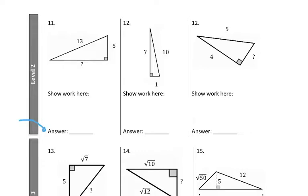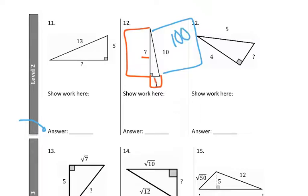Let's use the Pythagorean theorem to answer question twelve. We're changing the information we know at this point. We know the area of the blue square is 100 and the area of the small square is 1. So we're trying to figure out what area we need so that when we add it to 1 we end up with 100. That's simply 99 — this area has to be 99, so that 99 plus 1 gives us 100. That tells you the area, not the side length. So you take the square root of 99 for the length of the side.